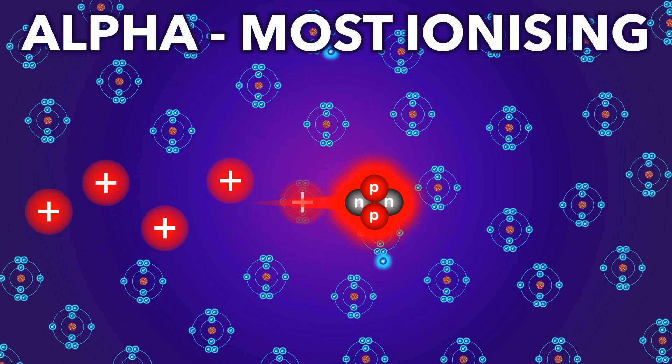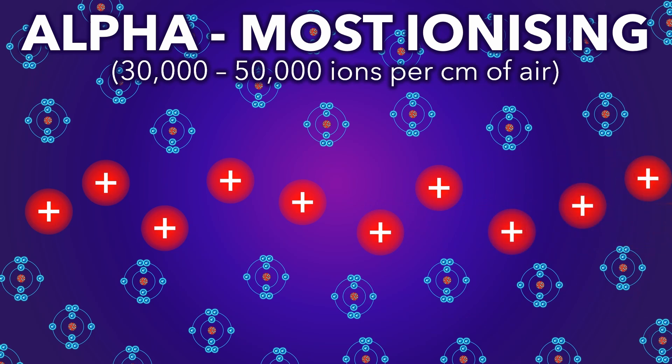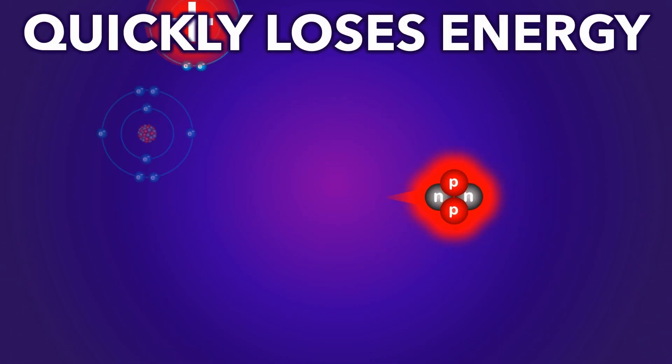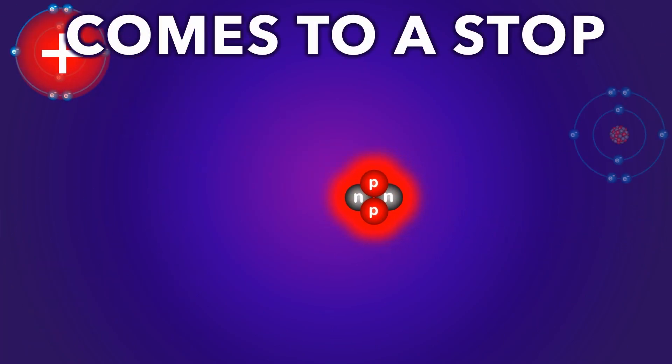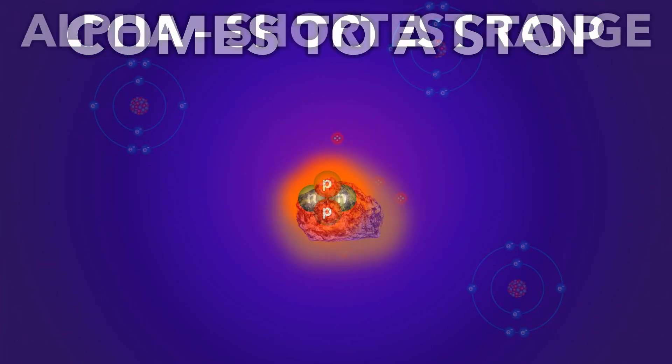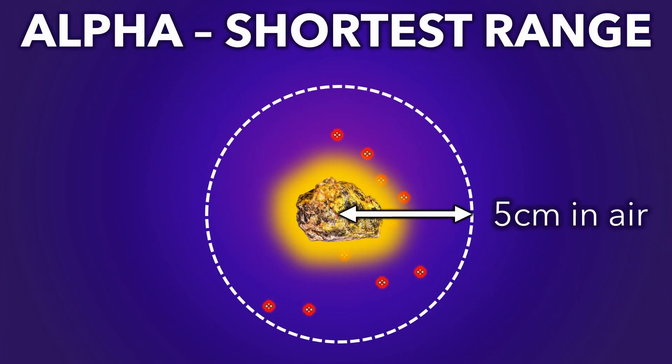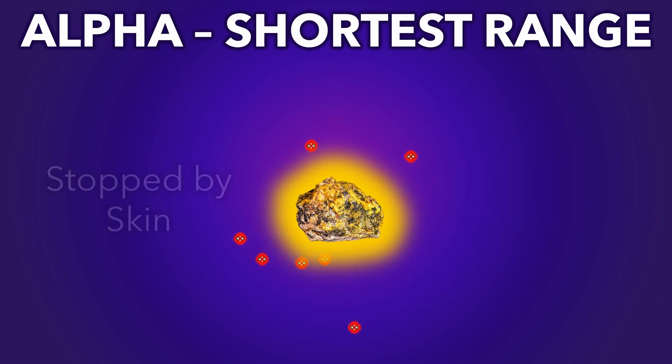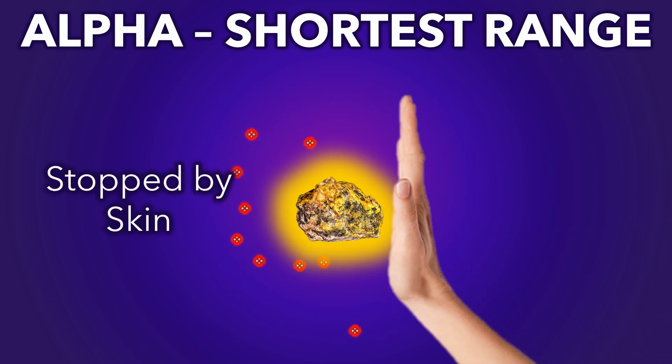Alpha is the most ionizing, creating 30,000 to 50,000 ions per centimeter of air. But being highly ionizing means it quickly loses energy and stops, giving it the shortest range of about 1 to 5 centimeters in air and it can't pass through skin.